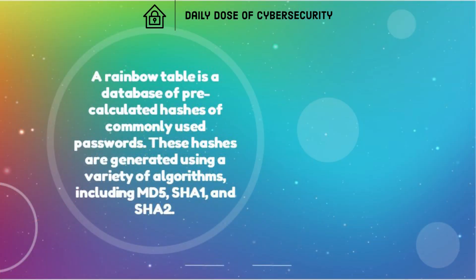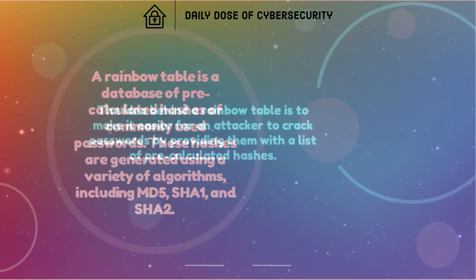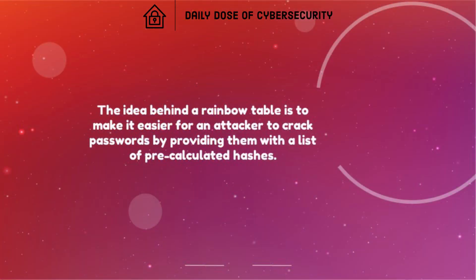A Rainbow Table is a database of pre-calculated hashes of commonly used passwords. These hashes are generated using a variety of algorithms, including MD5, SHA1, and SHA2. The idea behind a Rainbow Table is to make it easier for an attacker to crack passwords by providing them with a list of pre-calculated hashes.